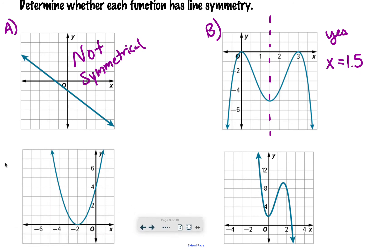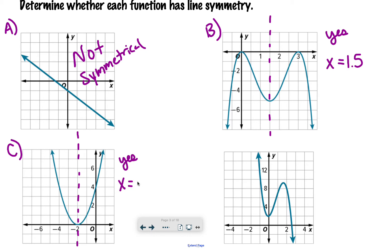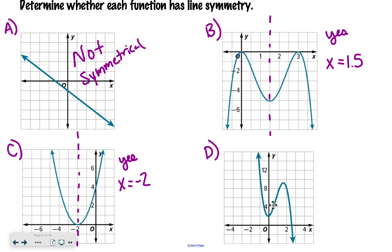Let's move on to our next one — we'll call this letter C. Is this one symmetrical? Usually our parabolas are symmetrical, and by usually I mean always. So here's my line of symmetry. Since it's symmetrical, I say yes, and then x equals negative 2. Now moving on to the last one: I have kind of a weird curve happening here. I don't see a spot where I can draw a vertical line and get a line of symmetry, so I'm just going to say no — that's not symmetrical.